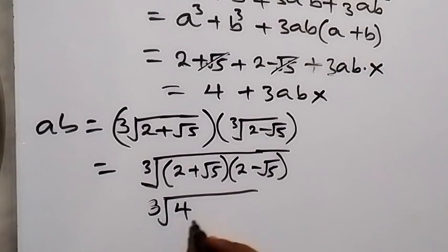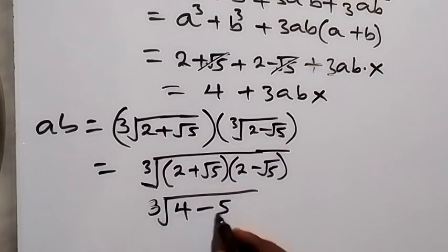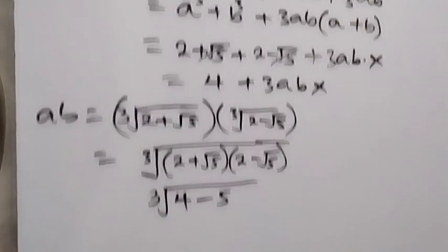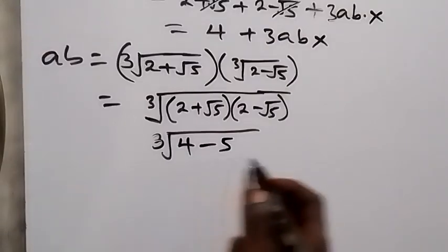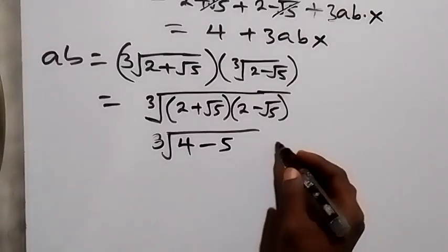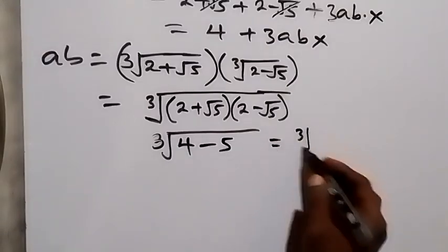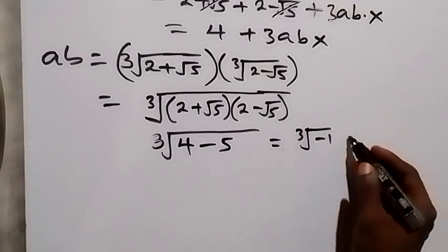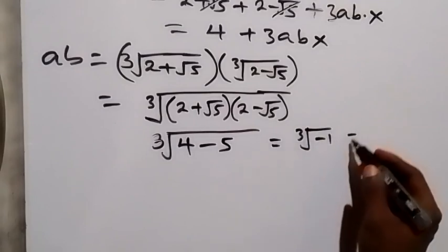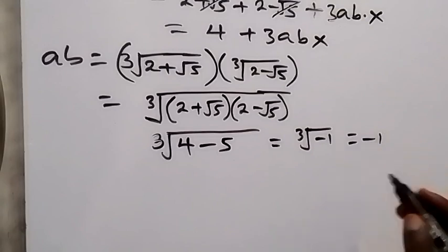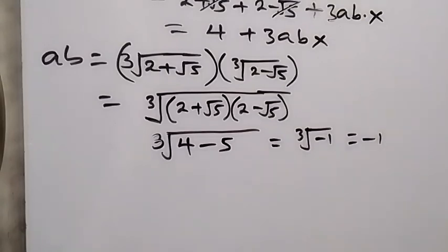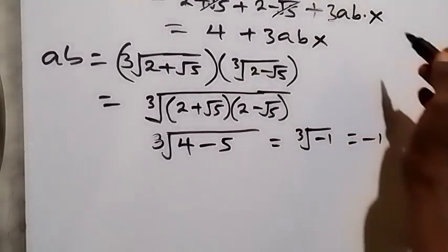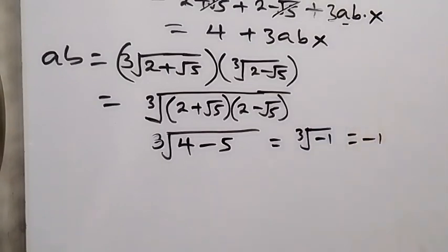That gives cube root of (4 − 5), which is the cube root of −1. The cube root of −1 equals −1, so ab = −1.